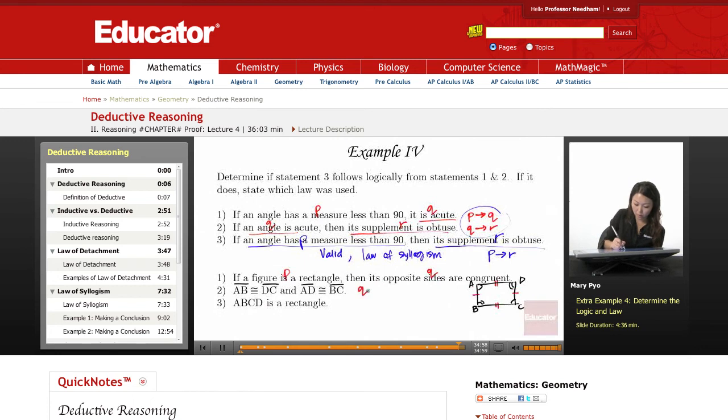Q, right? Because it says if the opposite sides are congruent, A, B, C, D is a rectangle. This is P. Let me use a different color for that one. This is P.